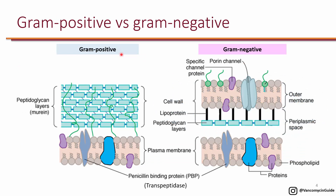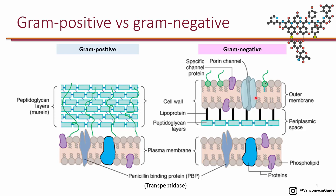Vancomycin binds to the D-Ala-D-Ala residue of the peptidoglycan layer and therefore inhibits formation of the peptidoglycan layer. In gram-negatives, there is an outer membrane above the peptidoglycan layer. Vancomycin is a huge molecule and because of its size, it cannot go through the outer membrane of gram-negative organisms and therefore cannot reach the peptidoglycan layer. Therefore, vancomycin does not have activity against any gram-negative organism — only gram-positive organisms.